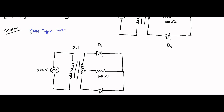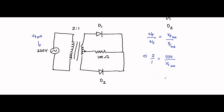We are given a turns ratio of 2:1. Using that, we determine the secondary winding voltage. The turns ratio NP/NS is related to the primary and secondary winding voltages. VPRMS is 220V, since the main supply of 220V RMS is connected to the primary winding. That implies NP/NS = 2/1 = 220/VS_RMS, so VS_RMS = 220/2 = 110V. This is the RMS value of the secondary winding voltage.